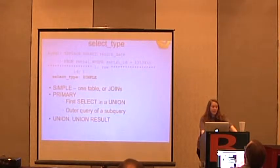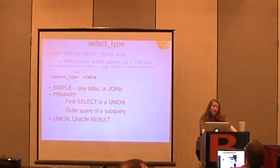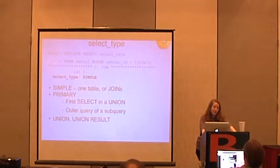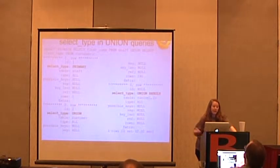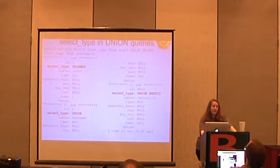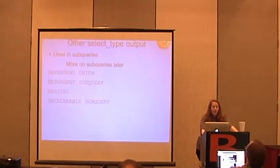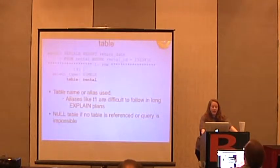SELECT type is either SIMPLE — meaning one table or joins — or PRIMARY, which is the first SELECT in a UNION or the outer query of a subquery. Then you have UNION and UNION RESULT. A UNION would show primary, union, and then union result as a kind of ghost table. Other types include DEPENDENT UNION, DEPENDENT SUBQUERY, DERIVED, and UNCACHEABLE SUBQUERY.